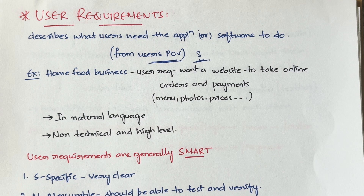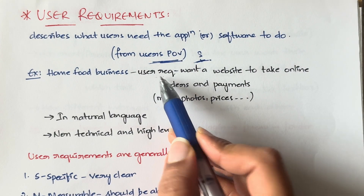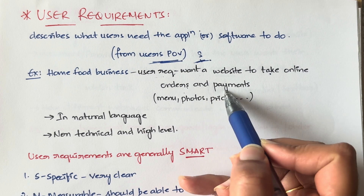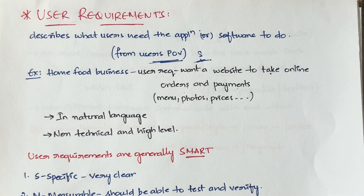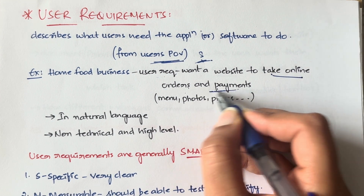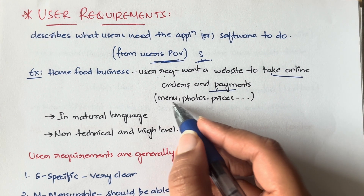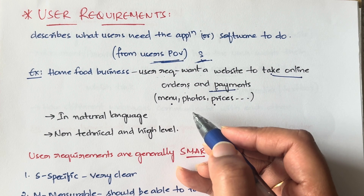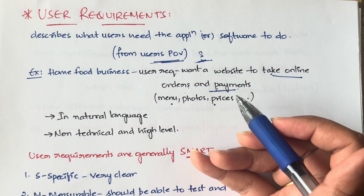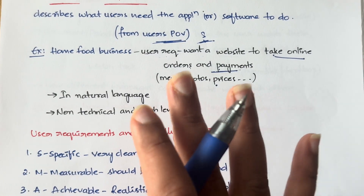For example, let's say you are doing a home food business — homemade snacks, homemade pickles, or similar items. Your requirement is to create a website to take online orders and payments from customers, similar to how people order on Zomato, Swiggy, or Uber Eats. That website has to take online orders, accept payments, and display the menu with prices and photos of the items.